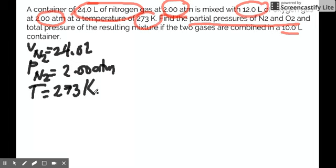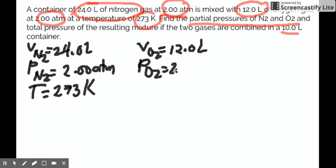And then you know also that the initial temperature is 273 Kelvin. Well, for O2, you know that the volume of O2 is 12.0 liters prior to mixing. P O2 is 2.00 atmosphere. And of course, temperature is 273 Kelvin for both.